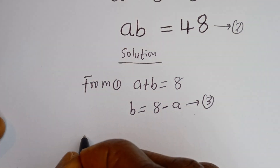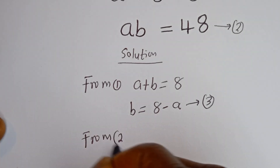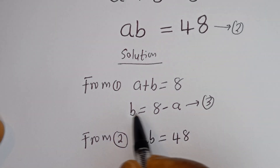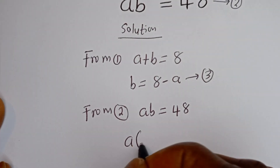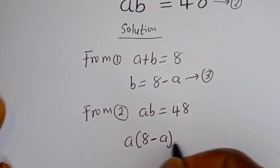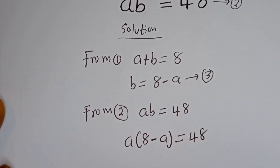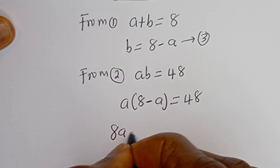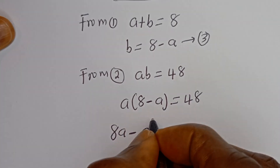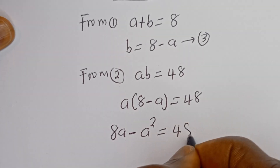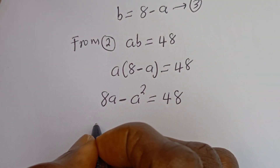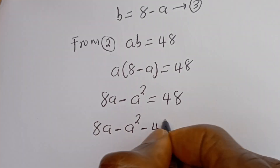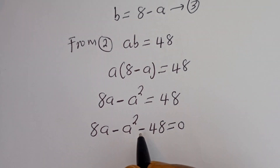Then from equation 2, AB is equal to 48. We can substitute for B, giving us A times (8 minus A) is equal to 48. Expanding: 8A minus A squared is equal to 48.